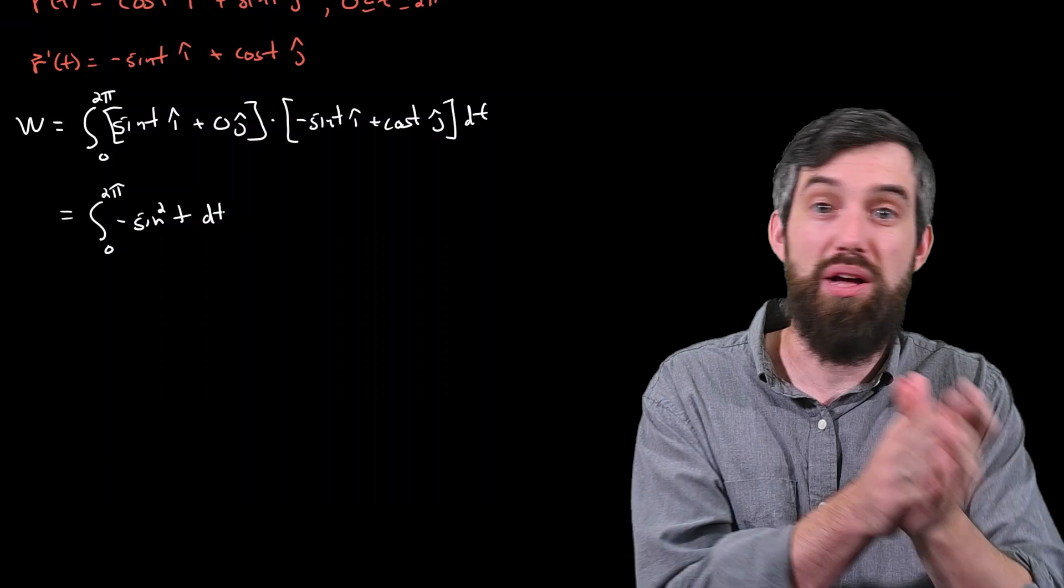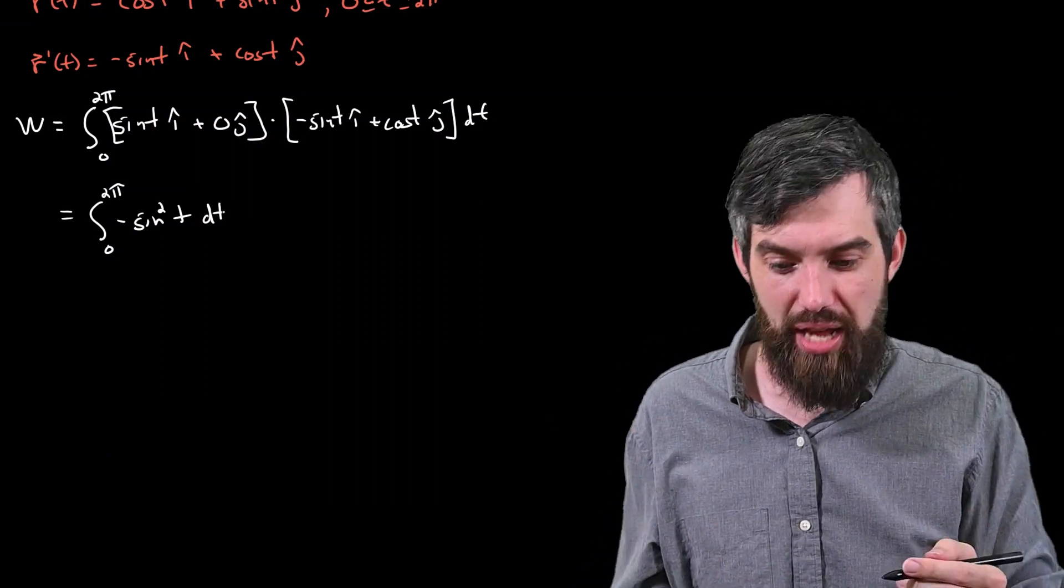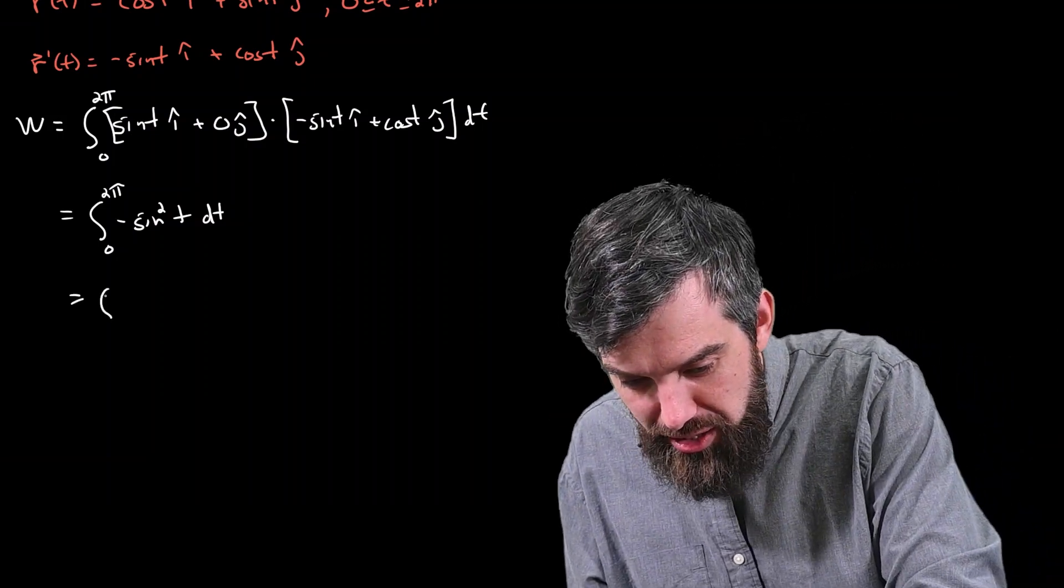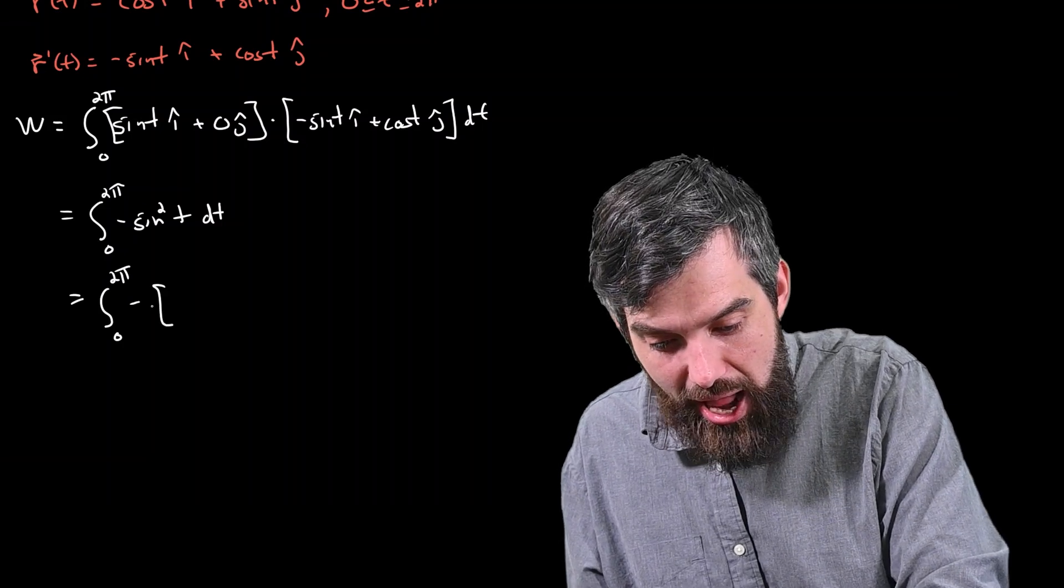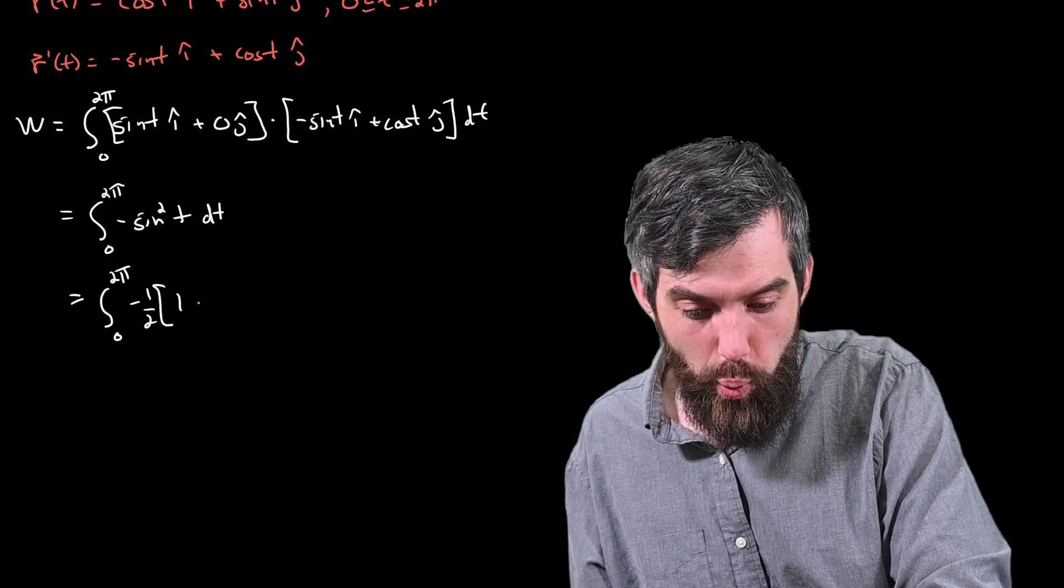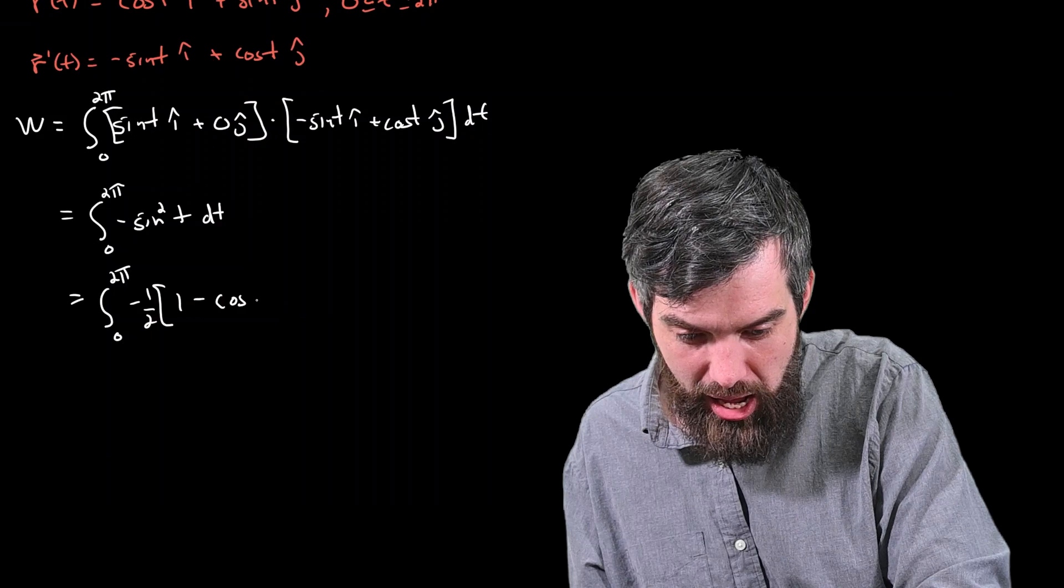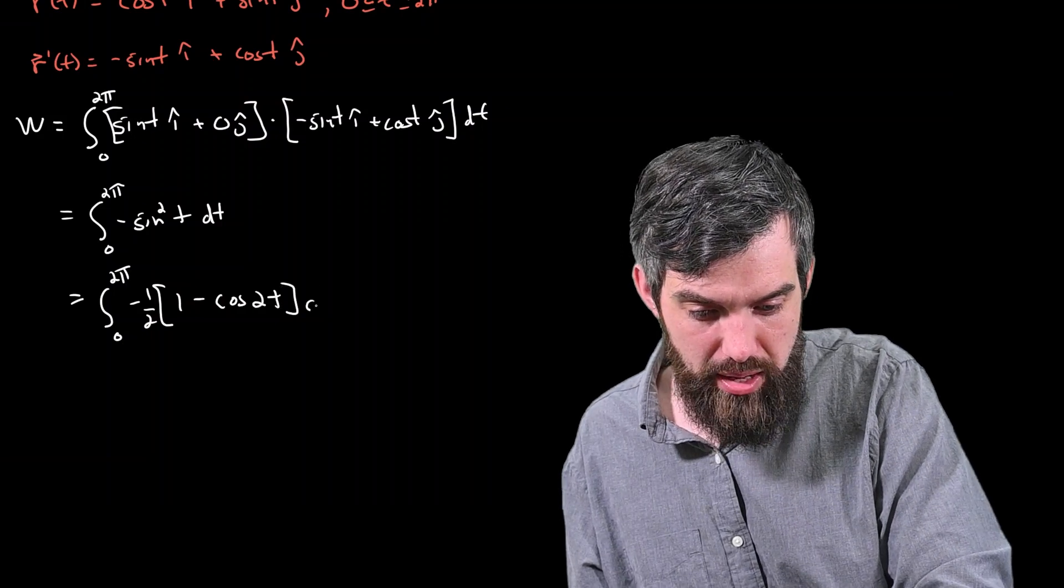This is a standard calculus 2 problem. It's just integral of sin². There's a little trig identity we can use. 0 up to 2π of -½(1 - cos(2t)). Integrate with respect to t.